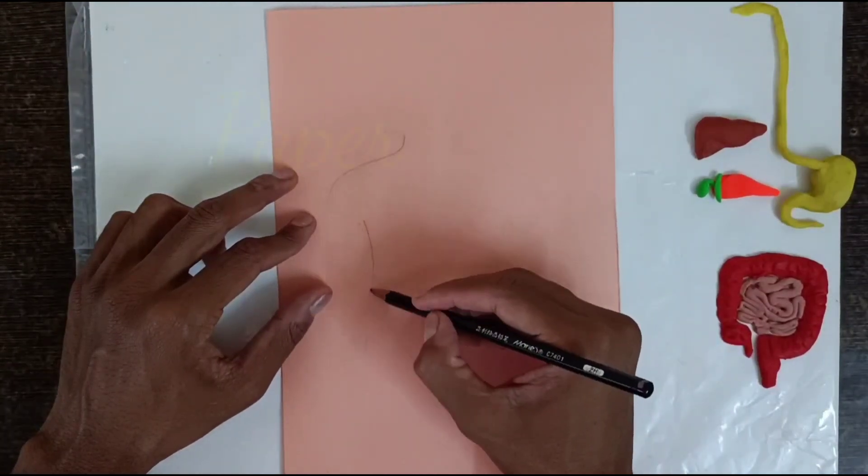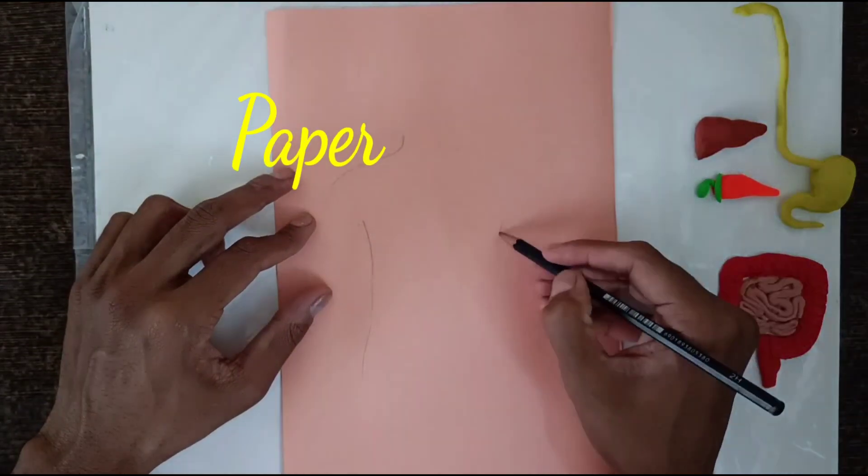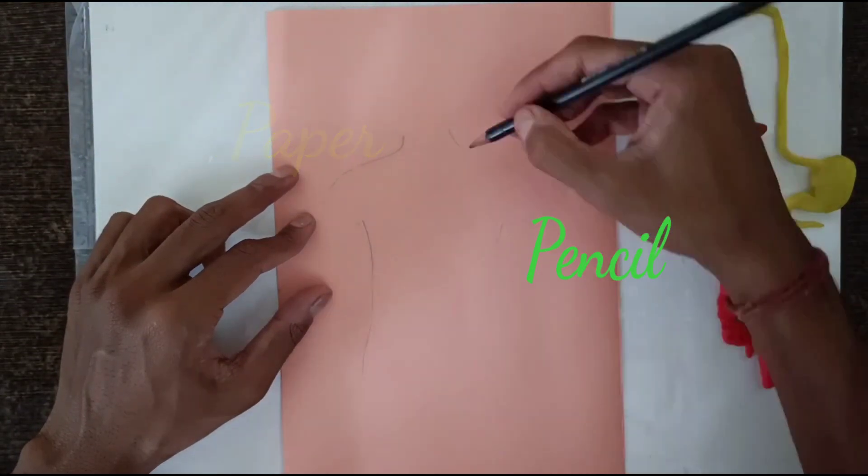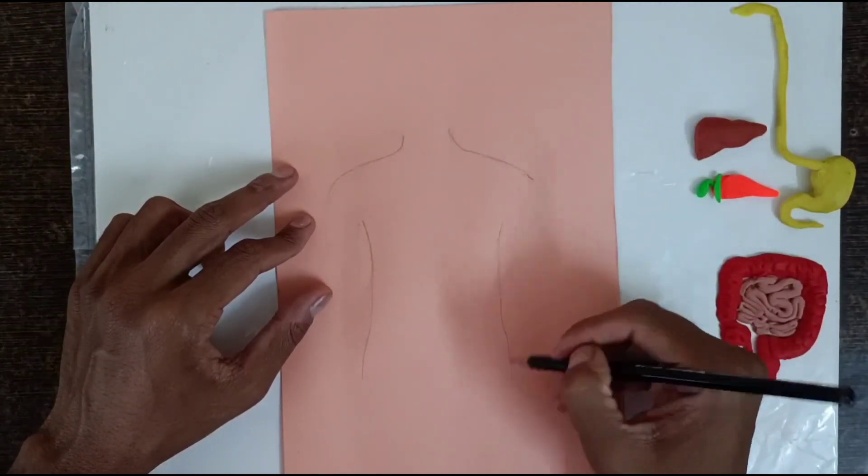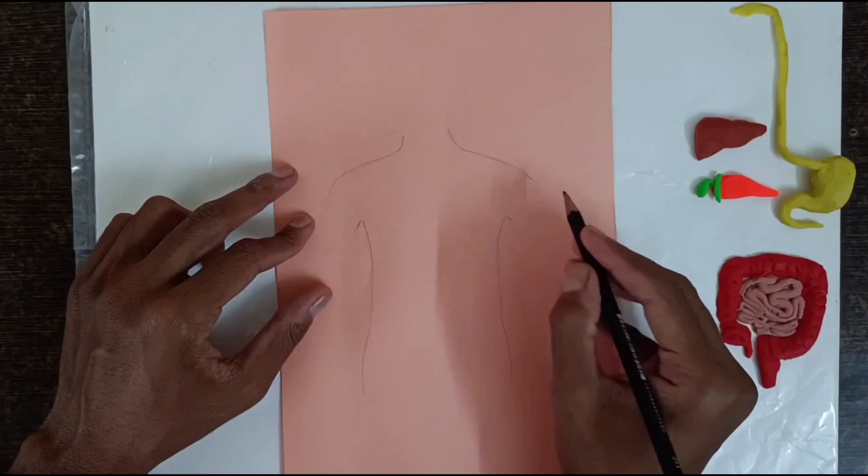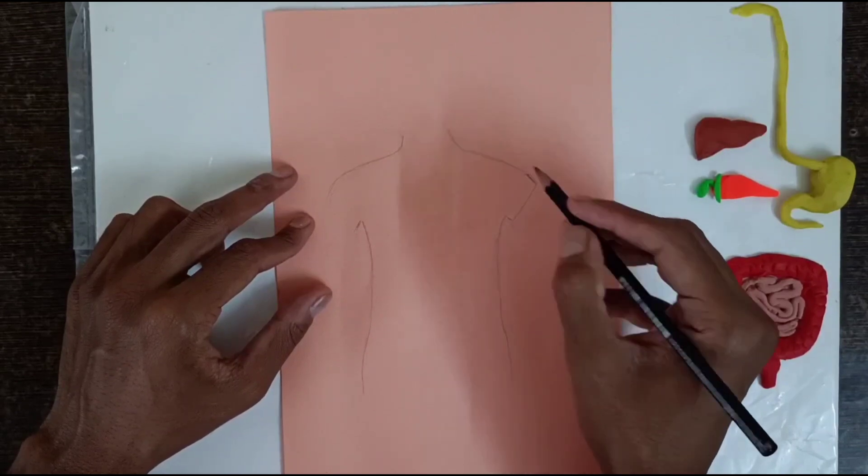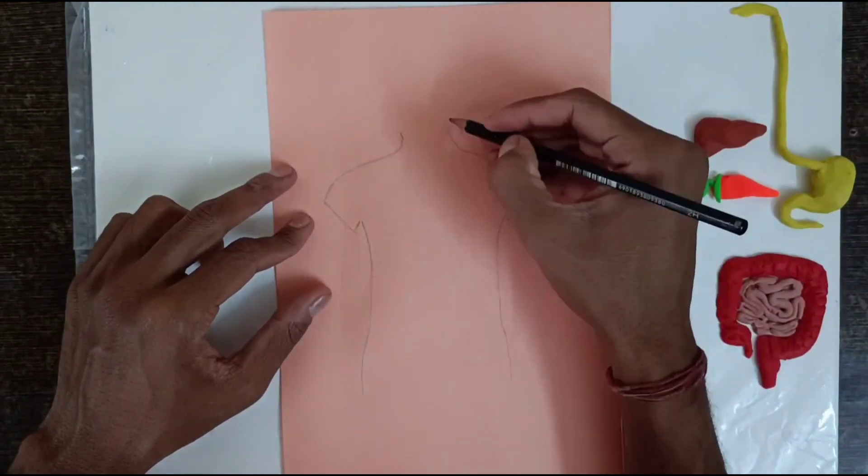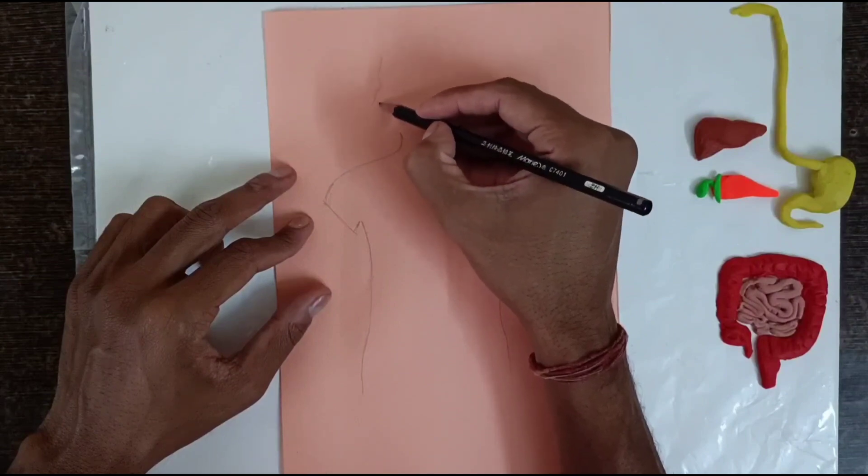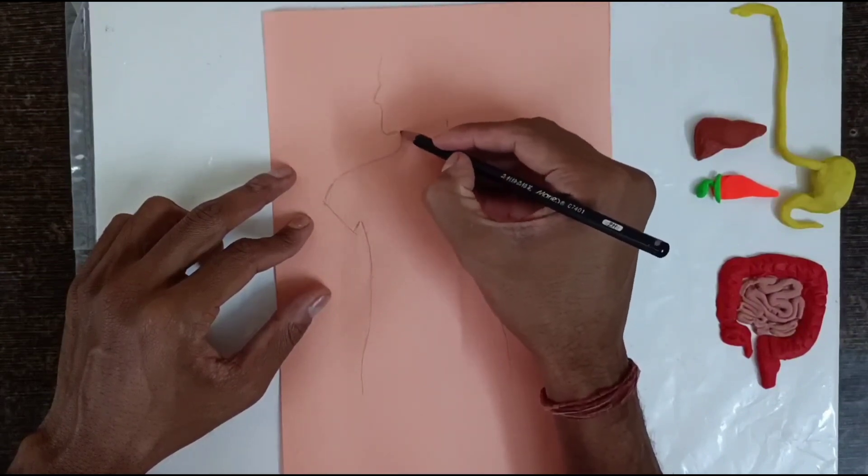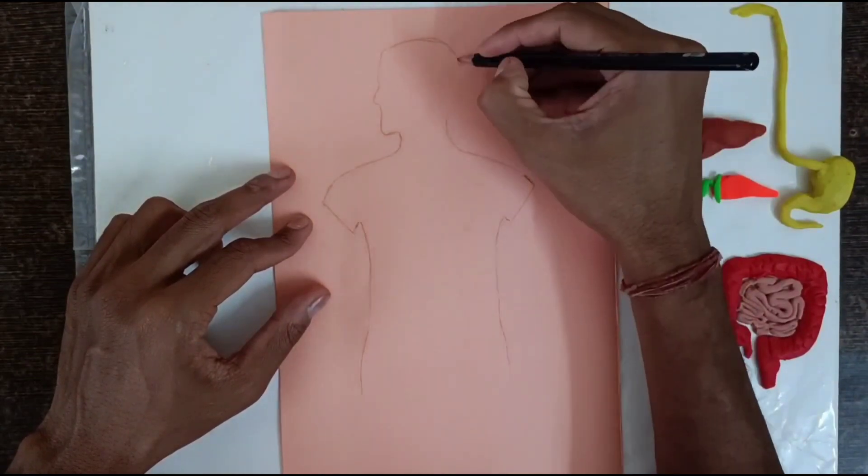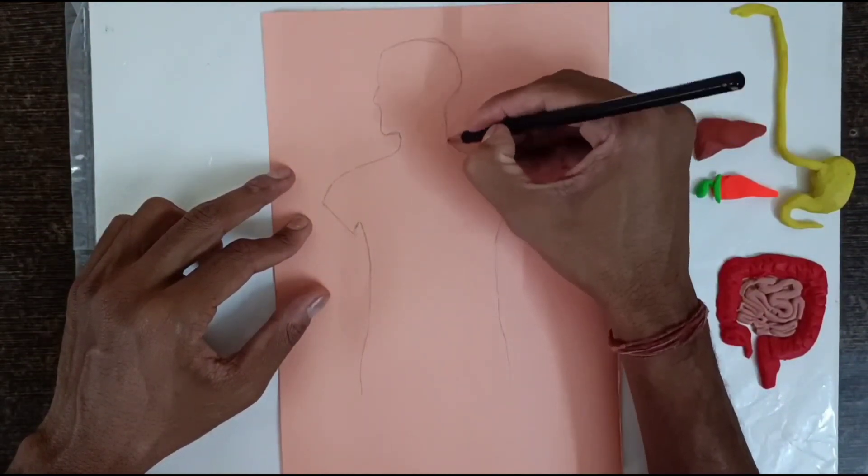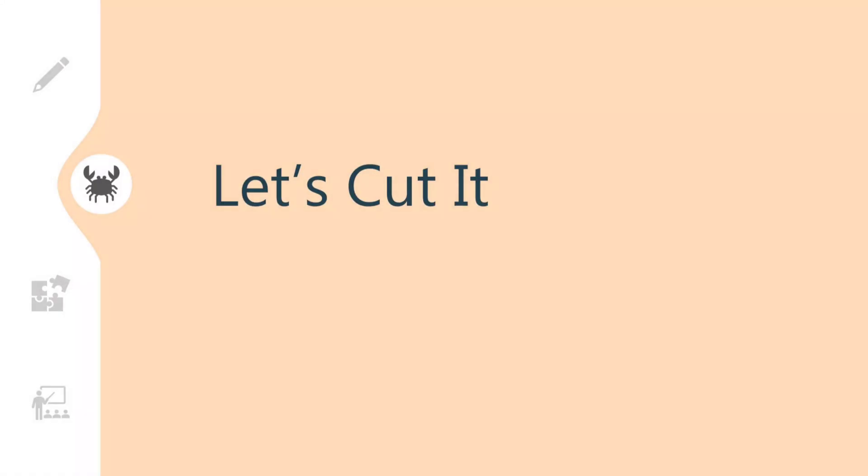To draw a human figure, take a paper and pencil. Once done, take a scissor and cut it into shape.